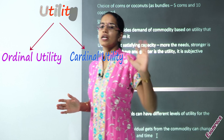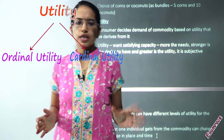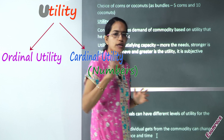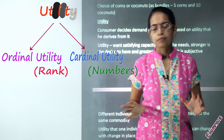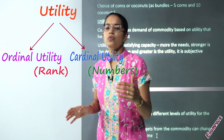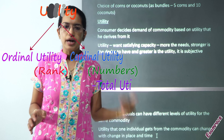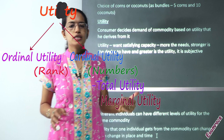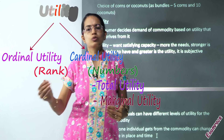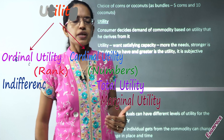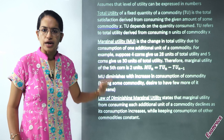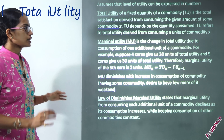Cardinal utility talks about numbers; on the other hand, ordinal utility talks about ranking. Under cardinal utility we include total utility and marginal utility. Under ordinal utility we include the indifference curve. So let's first understand what total utility and marginal utility are.